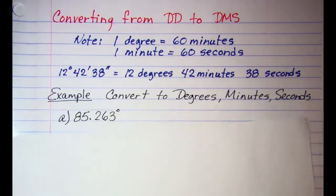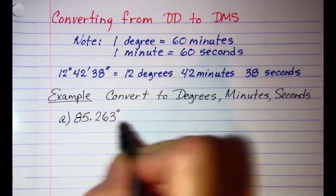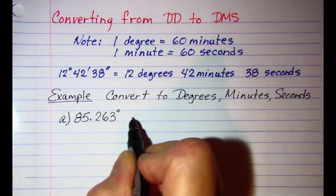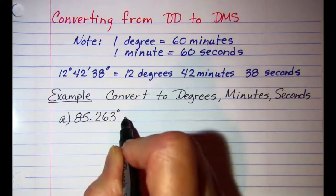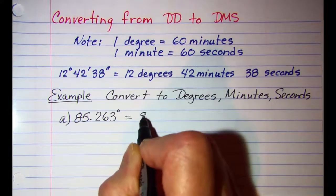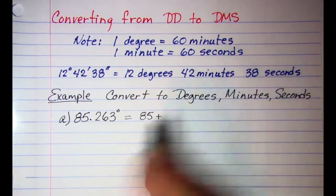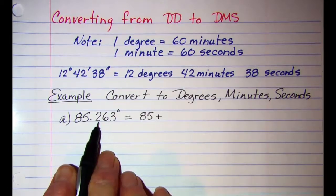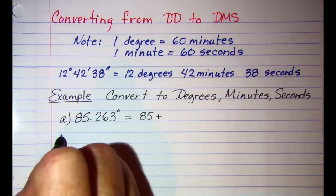The first example we are asked to convert to degrees, minutes, and seconds. Now we already have 85 degrees right here, so this I'm just going to copy. This is 0.263 of a degree, so I need to convert that.